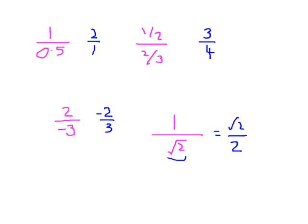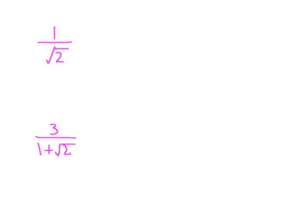And that's what we're aiming for. To rationalise one over root two, we multiply top and bottom by the number which makes the denominator a rational number, and that's the square root of two. There are others, but the square root of two is the most obvious. So if we multiply top and bottom by the square root of two, we don't change the fraction, and we end up with the square root of two divided by two.